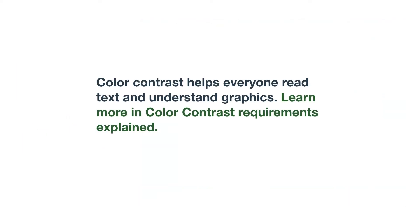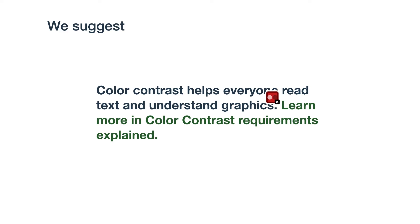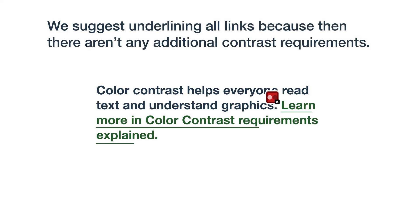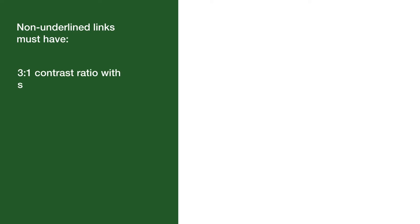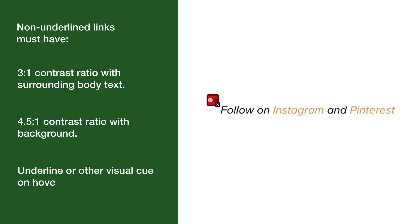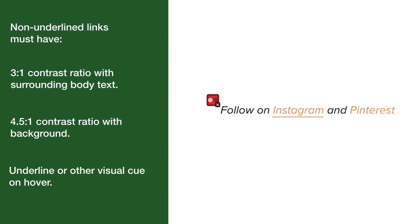The last contrast requirement is for links that aren't underlined. We suggest underlining all links because then there aren't any additional contrast requirements. But if you decide to use non-underlined links, they must have a contrast ratio of 3 to 1 with the color of the surrounding body text, they still have to meet the text requirement of 4.5 to 1 with the background color, and they have to have an underline or other visual cue when a user hovers over the link.